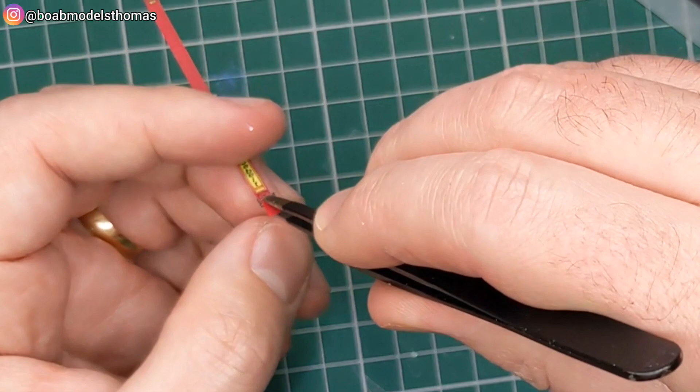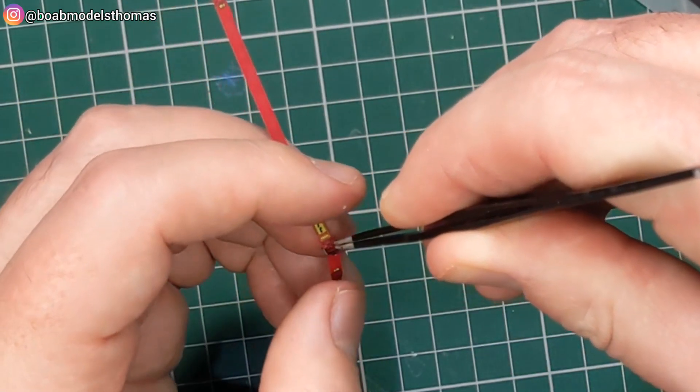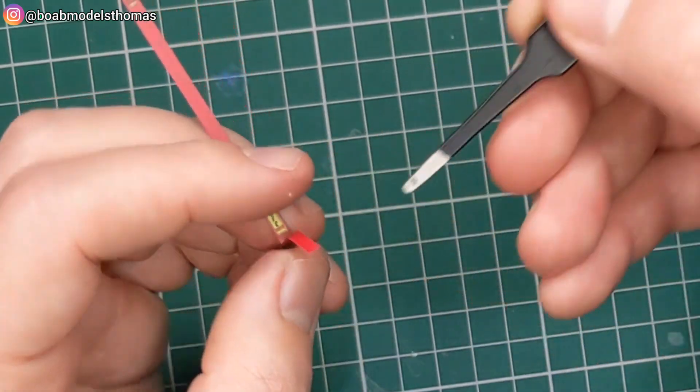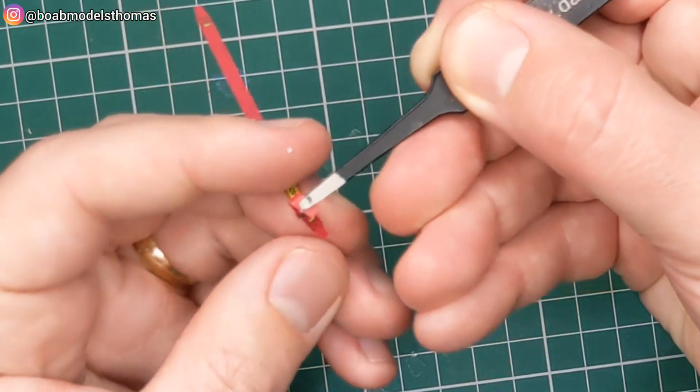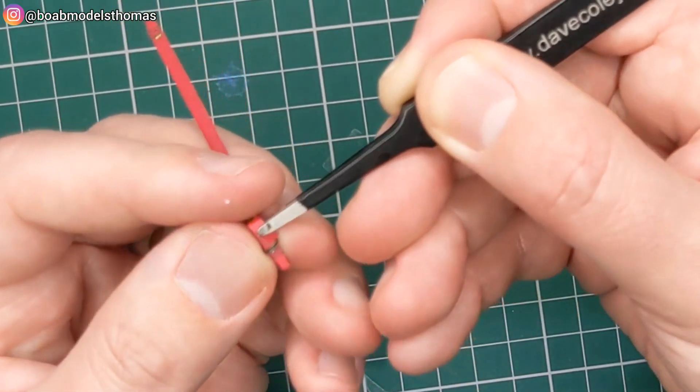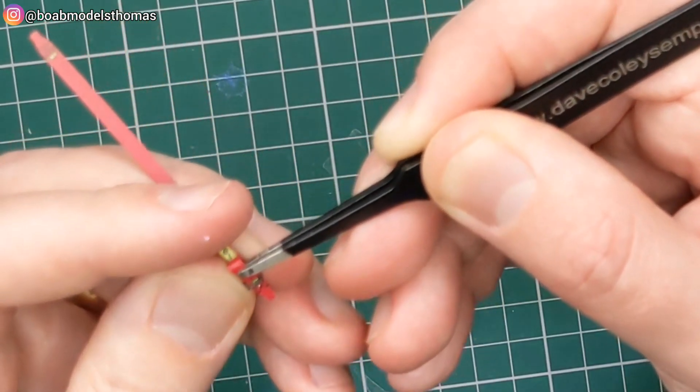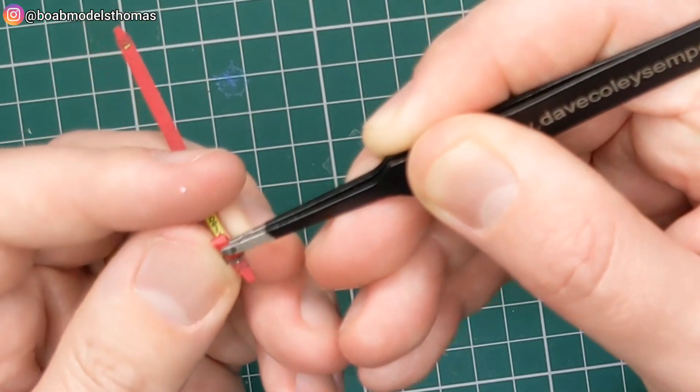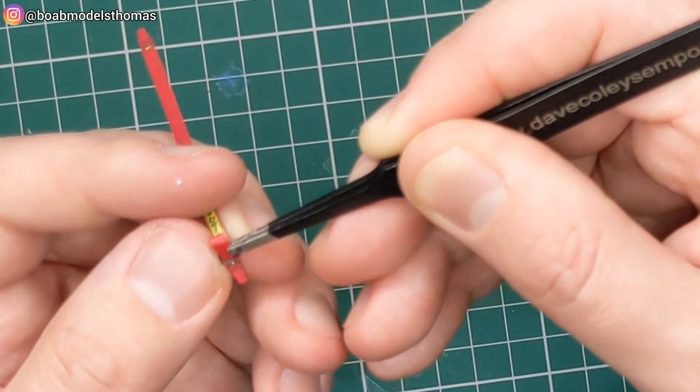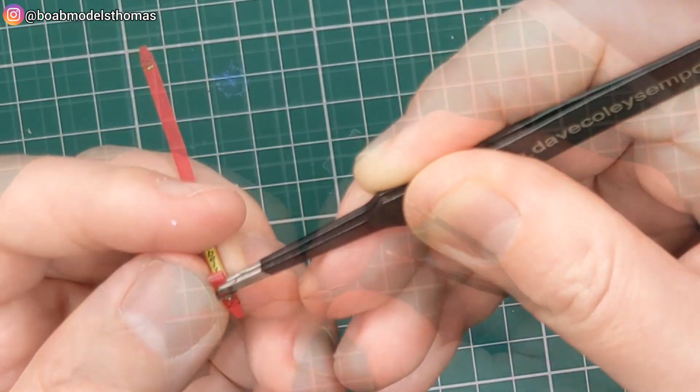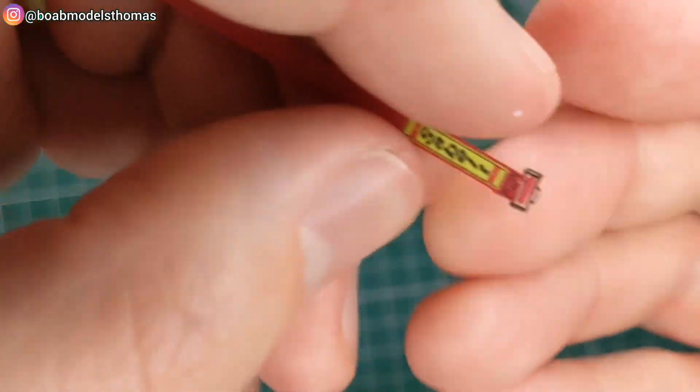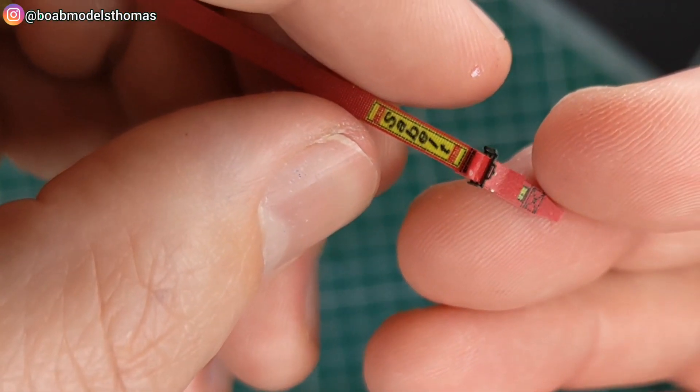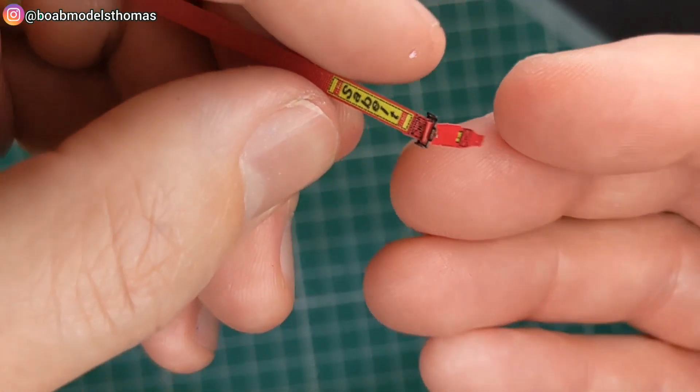So as you can see here I'm then folding this back up and then threading it back down to go through the buckle again which will keep it nice and secure. I did this correct on the left hand belt but on the right hand belt I actually did it wrong as you'll see later when I show you a picture of the finished one. So as you can see that is the correct way of doing it.